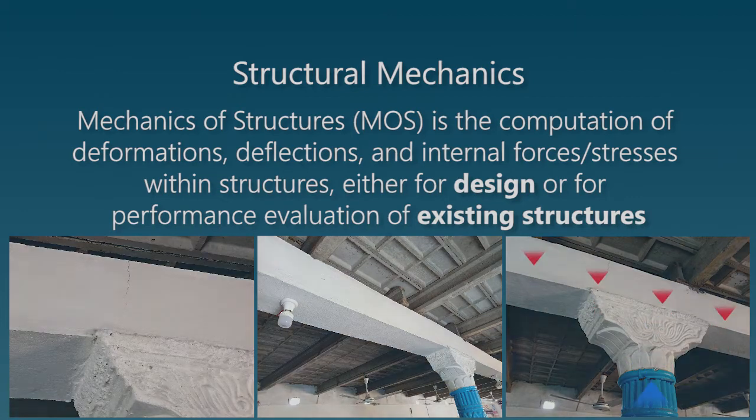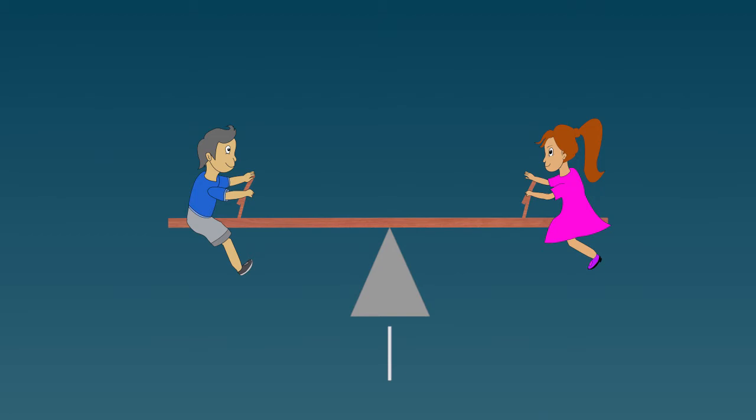Imagine a seesaw with two kids sitting on their seats. Consider both the kids to have the same mass of 30 kilograms and they are sitting at the same distance from the center. The situation won't be the same if one of the kids had a little more mass than the other.